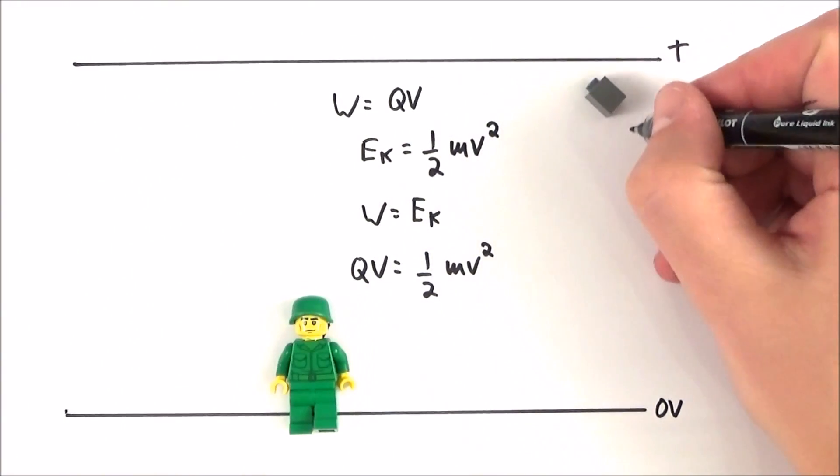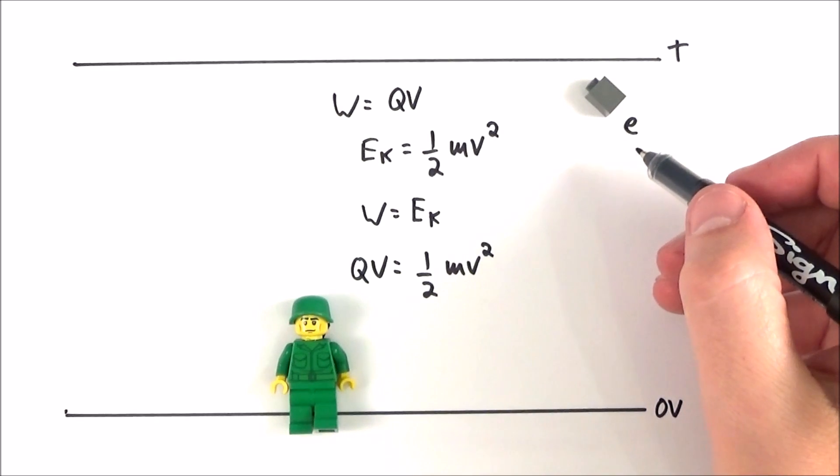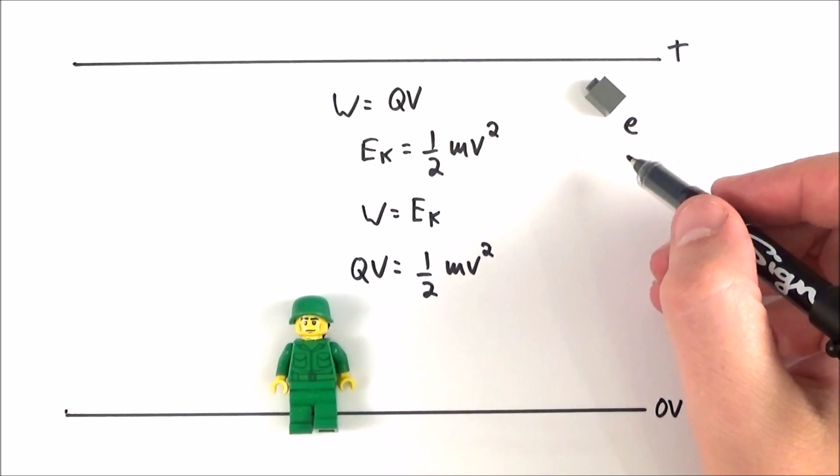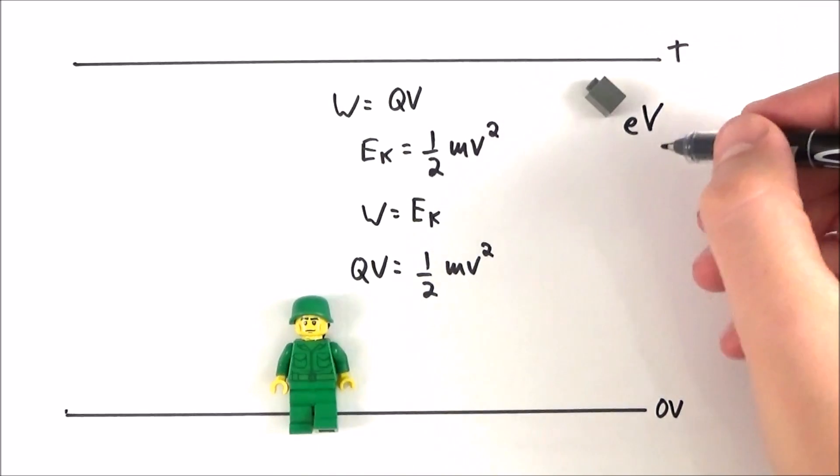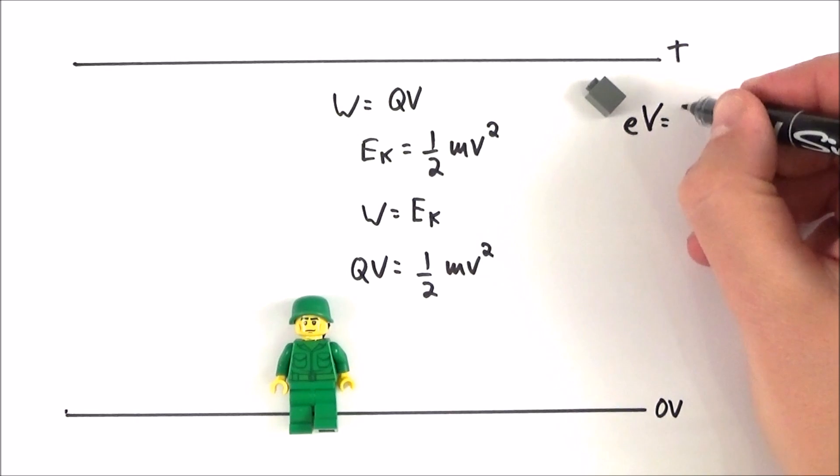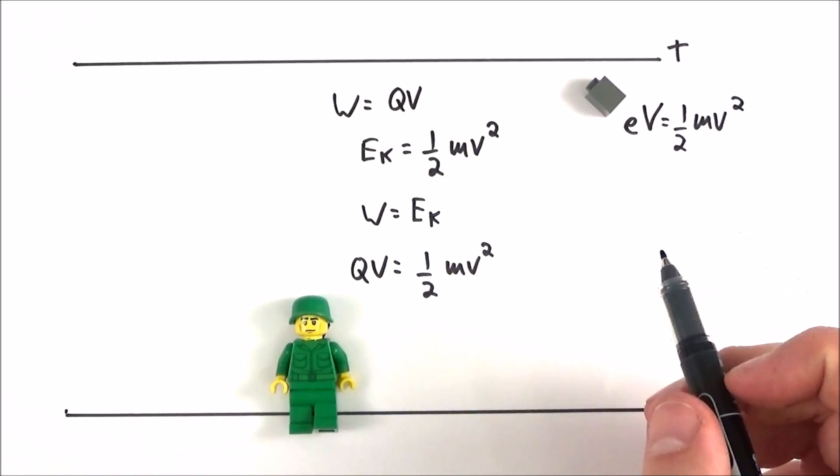Now the charge on the electron we give the symbol E. This is the elementary charge of minus 1.6 times 10 to minus 19 coulombs, and the energy we need to do to get it out there is going to be equal to E times the potential difference that we've moved it through. And this can then turn into its kinetic energy, which equals a half mv squared.